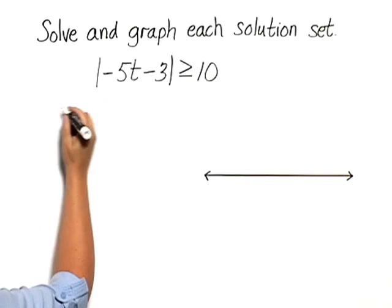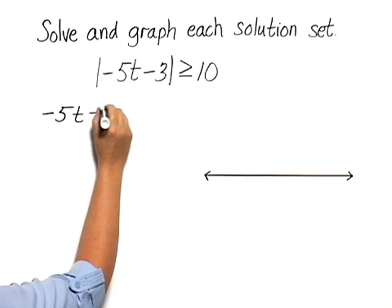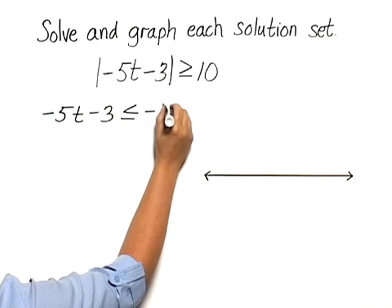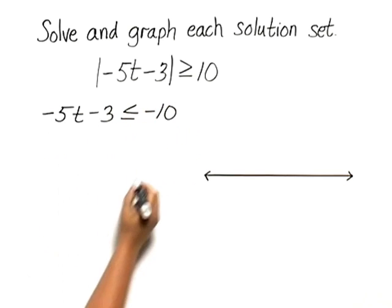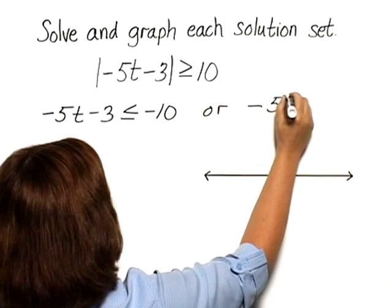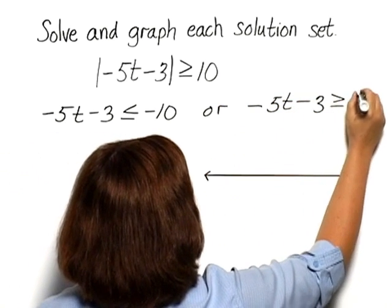We can say that negative 5t minus 3 is less than or equal to negative 10, or negative 5t minus 3 is greater than or equal to 10.